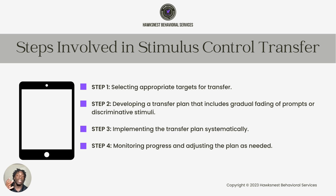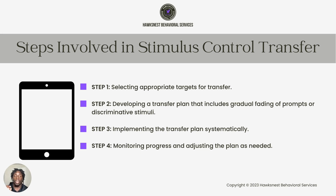So again, the steps involved in a stimulus control transfer plan are: one, select appropriate targets for transfer; step two, develop a transfer plan that includes gradual fading of prompts or discriminative stimuli; step three, implement the transfer plan systematically; and step four, monitor progress and adjust the plan as needed.